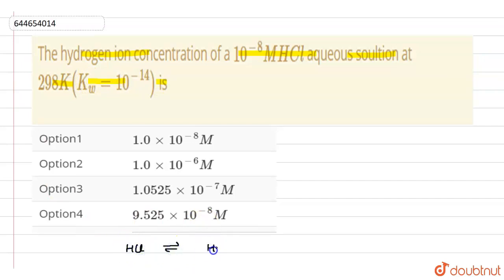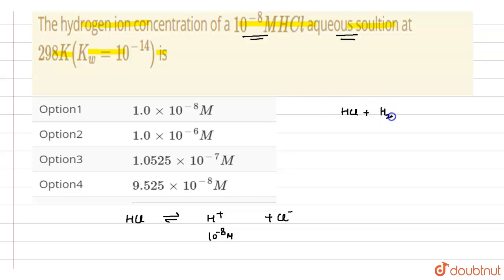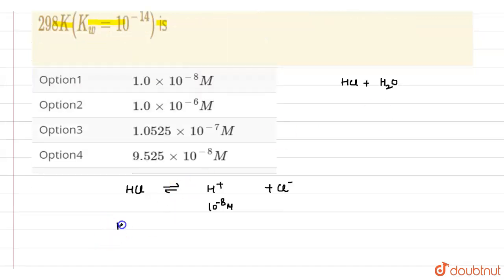HCl dissociates into H⁺ ion and Cl⁻ ion. The hydrogen ion concentration given is 10 raised to power minus 8 mole, and this is in aqueous solution — meaning HCl is present in water.